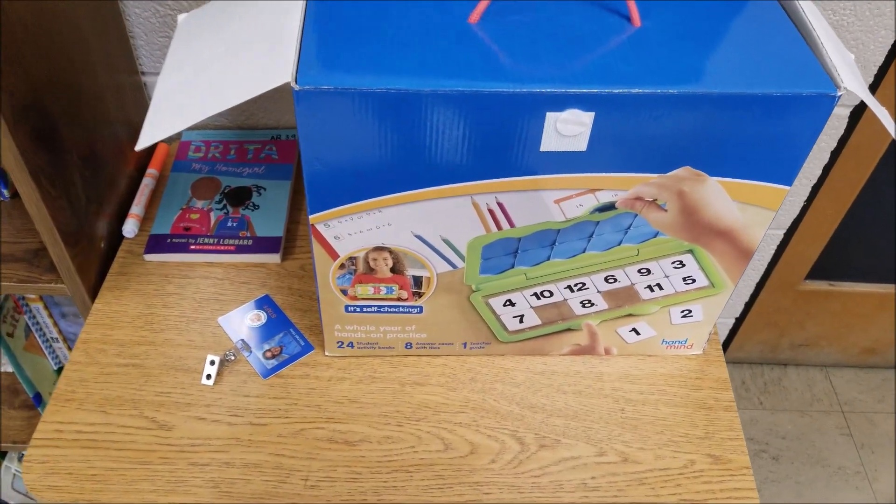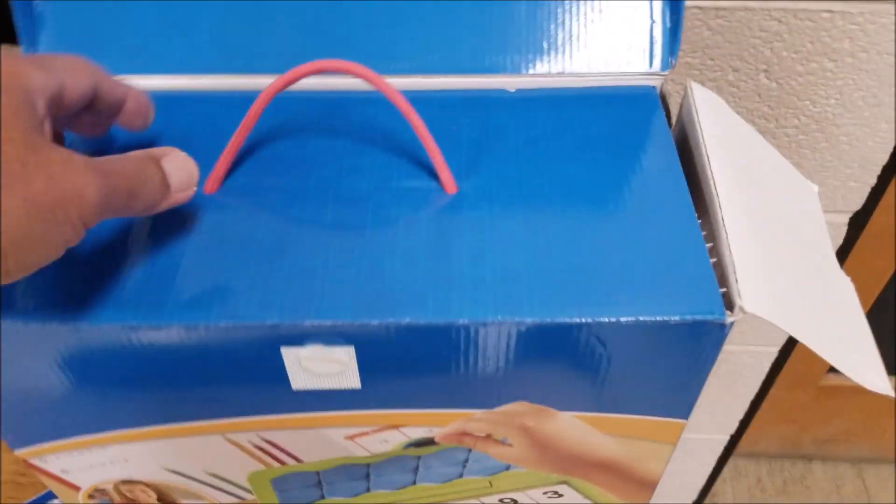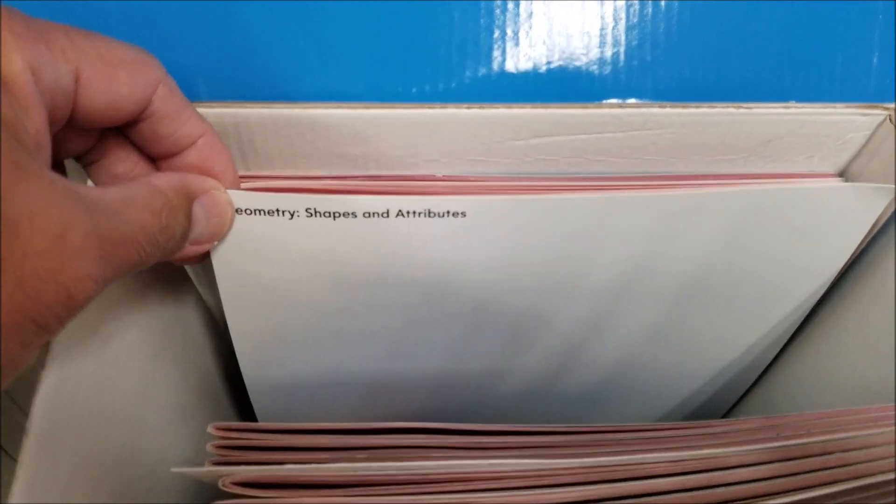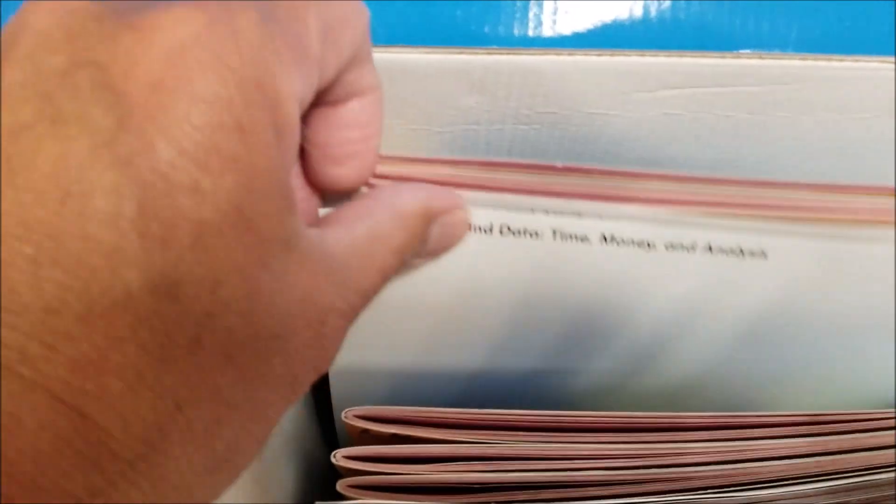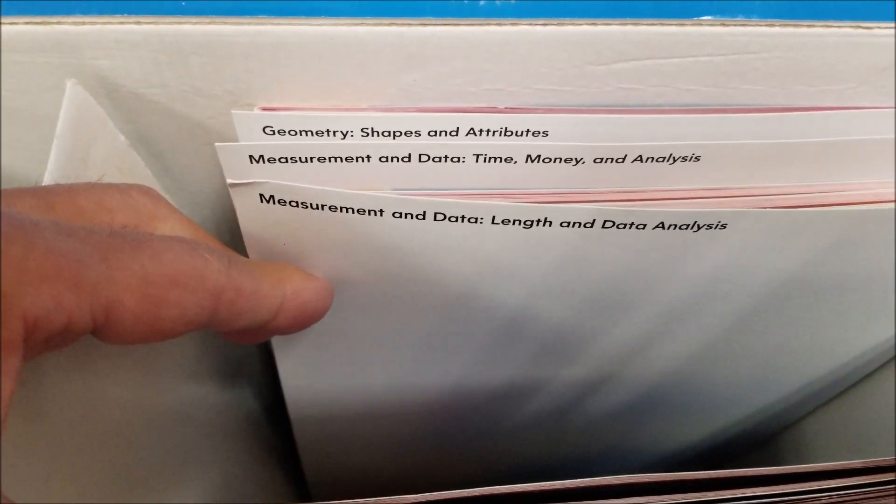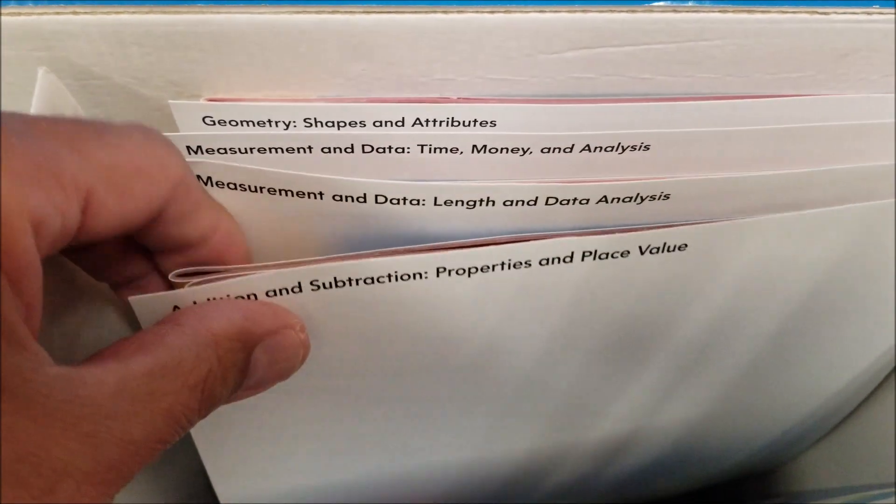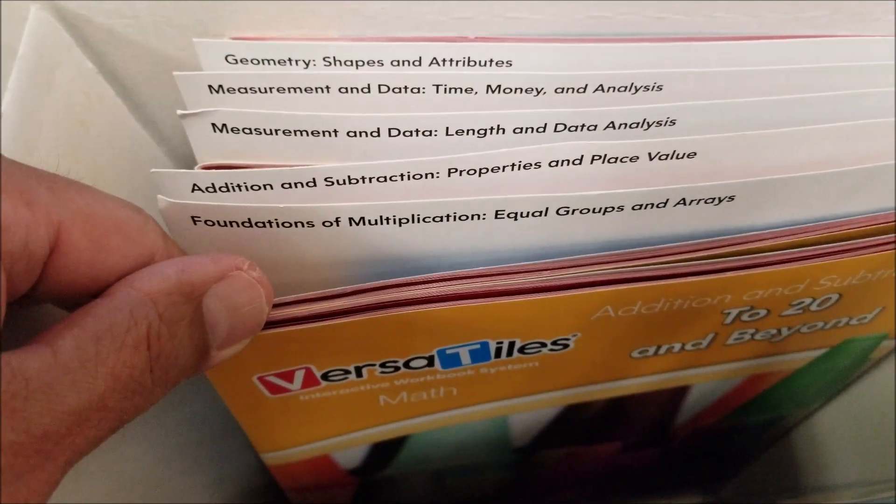Okay, so the particular Versatiles box that I have is for math, and it comes with a lot of second grade standards here. We've got geometry, measurement and data, more measurement and data, addition and subtraction, groups, equal groups and arrays.